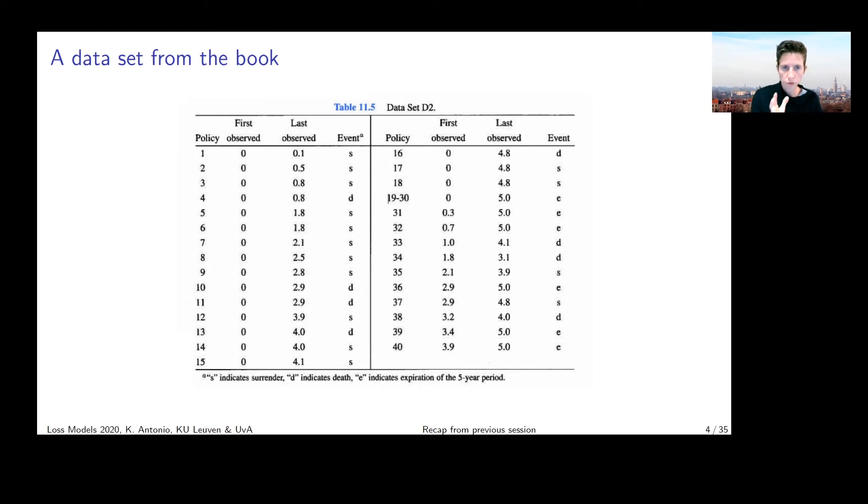You have to keep in mind this first observed and last observed, the interval during which we follow the policyholder. For the first 30 observations, that interval starts from time zero, the onset of the period during which we follow our contracts. But for the last 10 observations, those enter the period of study at a later point in time. For example, contract number 40 only enters the study at time 3.9. Before that time we did not follow this policyholder.